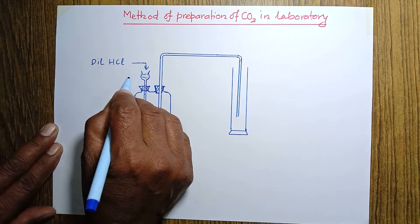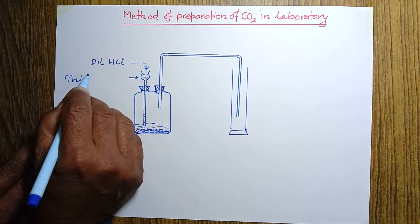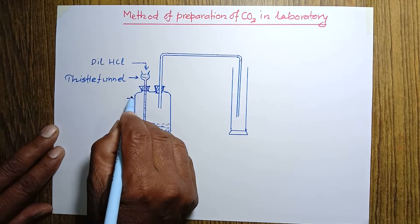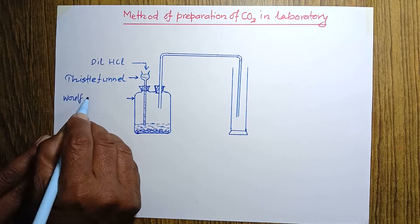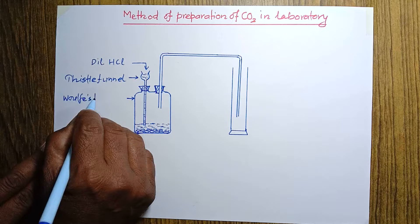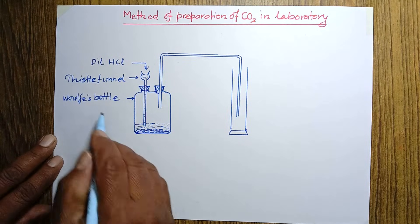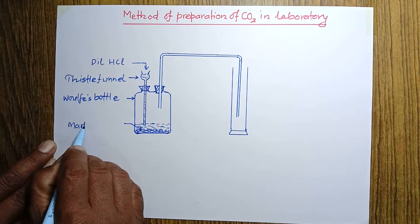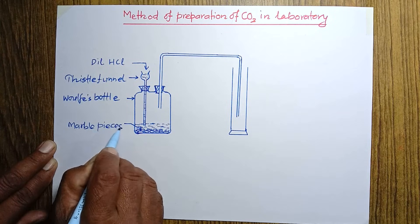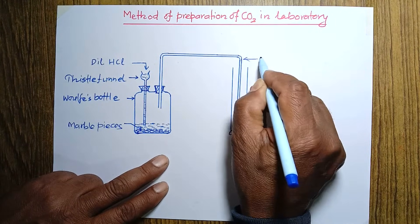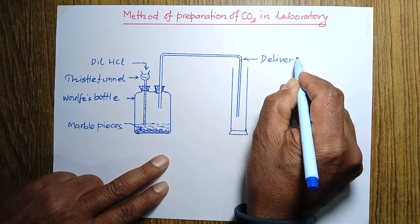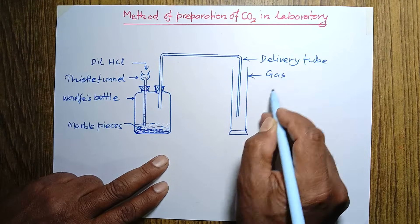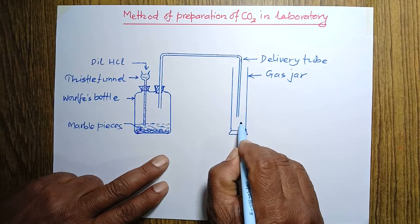This is the thistle funnel. This is the wolf bottle. These are marble pieces — we are using marble pieces here. This is the delivery tube. And this is the gas jar. And this is carbon dioxide gas.